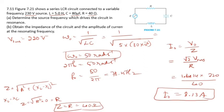Note: the given voltage in the question is 230 volt, not 220 volt. So the amplitude of current at resonant frequency is 8.13 ampere.